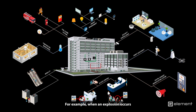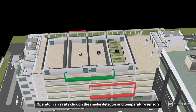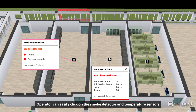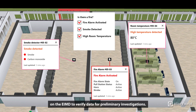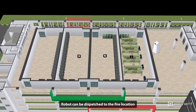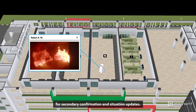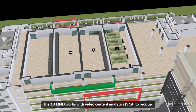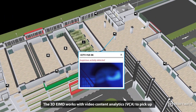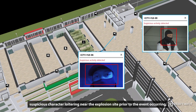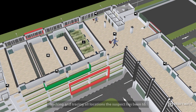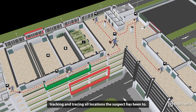For example, when an explosion occurs and the fire alarm is triggered, the operator can easily click on the smoke detector and temperature sensors on the EIMD to verify data for preliminary investigations. A robot can be dispatched to the fire location for secondary confirmation and situation updates. The 3D EIMD works with video content analytics to pick up suspicious characters loitering near the explosion site prior to the event occurring, tracking and tracing all locations the suspect has been to.